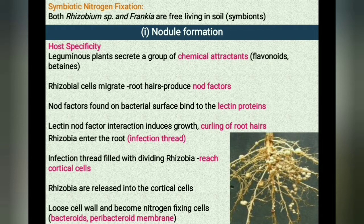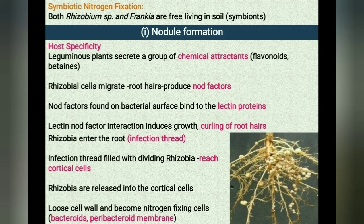This infection thread, filled with dividing rhizobia, elongates through the root hair and later branches to reach different cortical cells. The rhizobia are released into cortical cells, either singly or in groups enclosed by a membrane. The rhizobia stop dividing, lose the cell wall and become nitrogen-fixing cells called bacteroids. The membrane surrounding the bacteroids is called the peribacteroid membrane. The infected cortical cells divide to form the nodules.